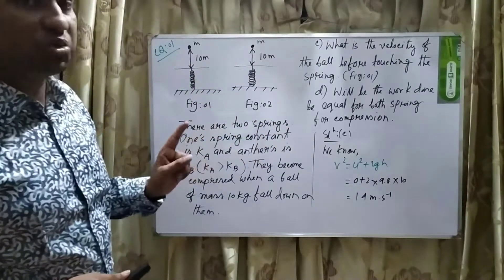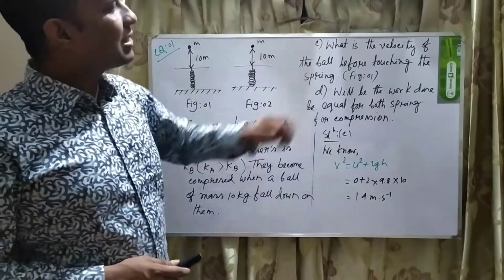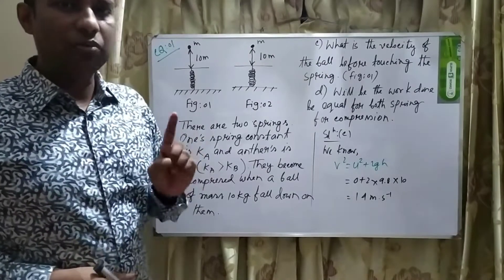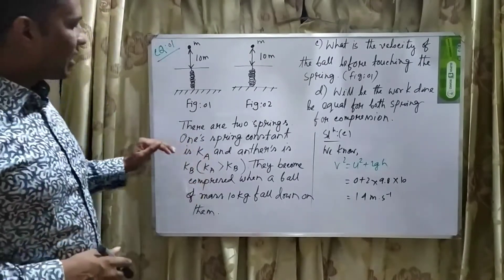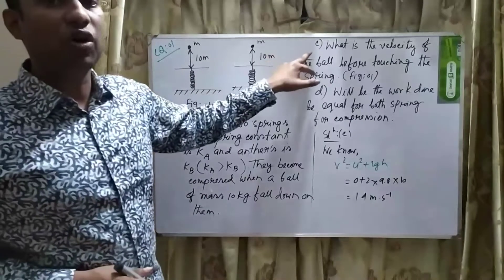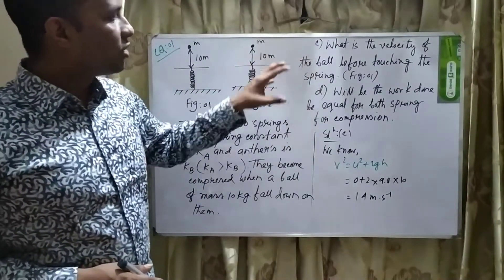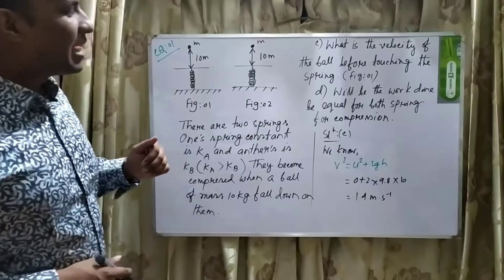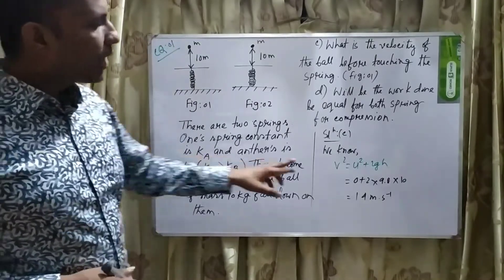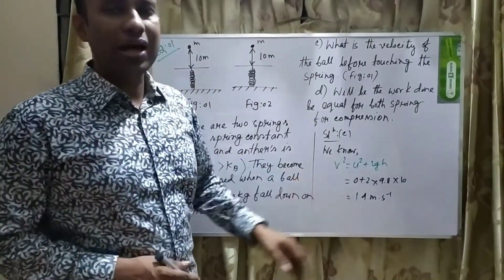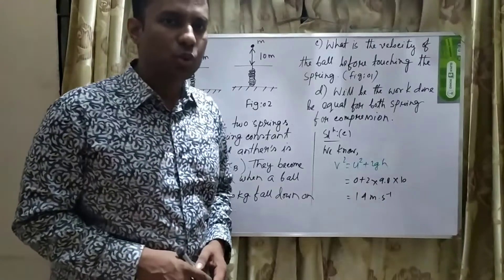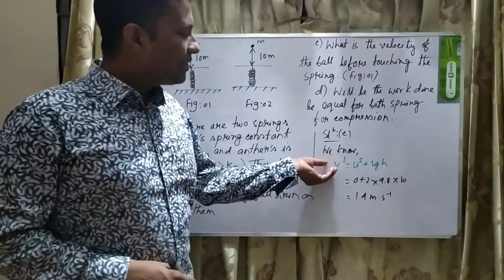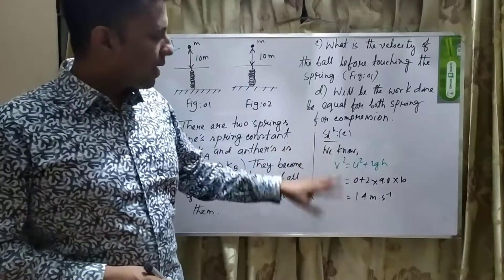The first question is: what is the velocity of the ball before touching the spring, for figure number 1? This is related to a falling body. So the equation will be: v squared equals u squared plus 2gh. With this equation, we will do the math.